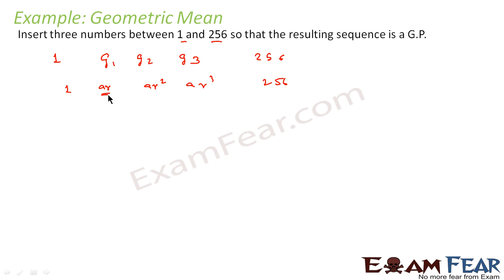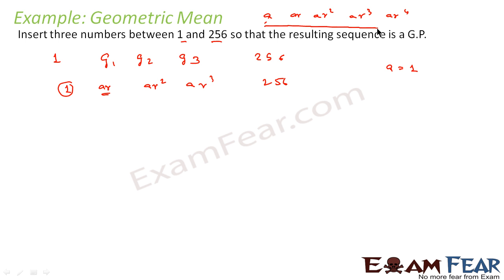Why have I done this? Because the GP sequence is a, ar, ar², ar³, ar⁴. Here the first term matches to 1, so a is equal to 1. The second term is ar, the third is ar², the fourth is ar³, and the fifth is ar⁴, which is 256. So our assumption is that a equals 1 and ar⁴ equals 256.